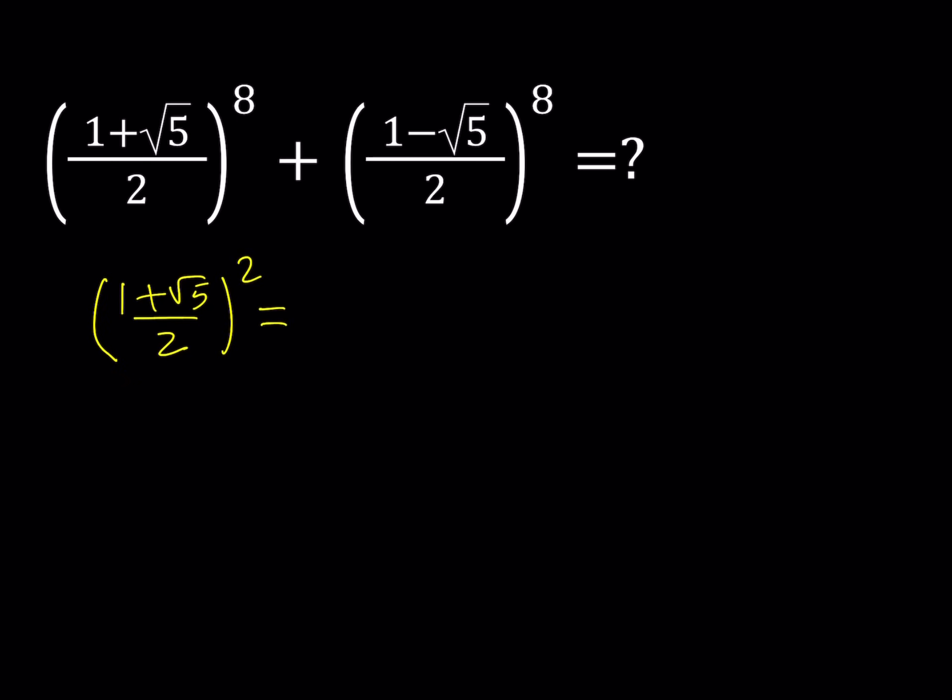Let's square it for fun. This is going to give us 6 plus 2 root 5 divided by 4. If you simplify this, you're going to get something like 3 plus root 5 over 2.